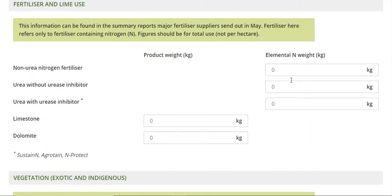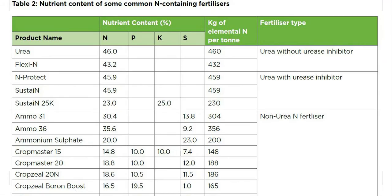We need the elemental nitrogen weight. Aaron has put together a resource with the help of the economic service team covering the elemental weights of a variety of products — over 400 different fertilisers that we know of, with the most commonly used ones included. By law, your fertiliser supplier has to supply you with the NPKS breakdown, available on your invoice, through the website, or through your agent.